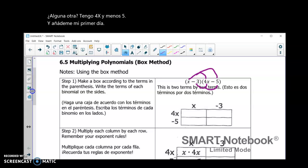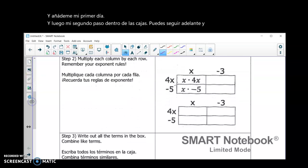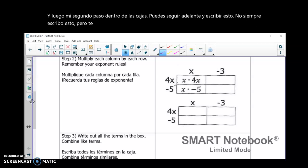And then in my second step, inside the boxes, you can go ahead and write this out. I don't always write this out. But I will just show you what we're doing here. We're going to multiply the x times the 4x. Then the negative 3 times the 4x.